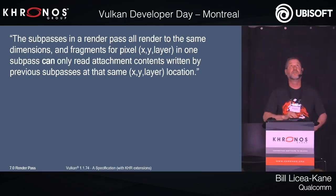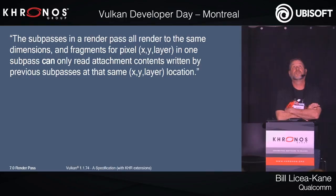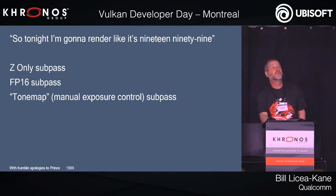Here is the wart in all of this, and why most of you don't like this. The sub-passes in a render pass all render at the same dimensions. The fragments for pixel XY layer in one sub-pass can only read the input attachment contents written by previous sub-passes at that same XY layer location. So — with apologies to Prince — tonight I'm going to render like it's 1999. This would have been fantastic a decade or two ago, but we've moved on.